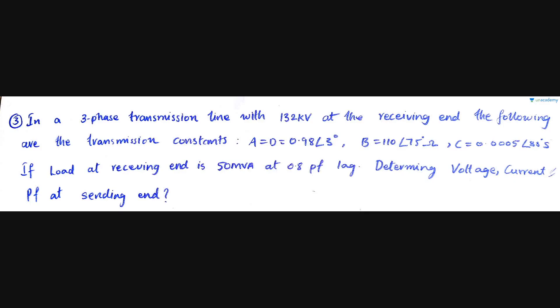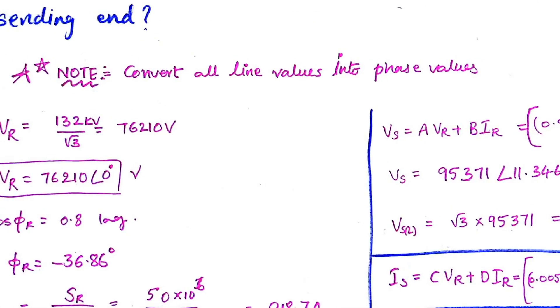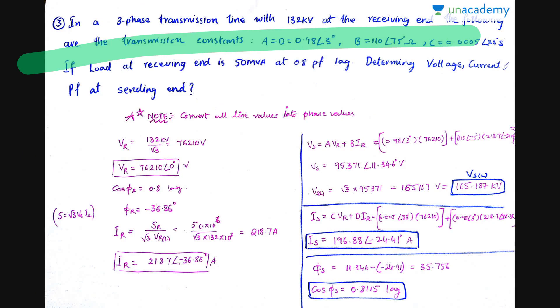Now, again, you just read the question and then pause the video and try on your own. In a three phase transmission line with 132 kV at receiving end, the following are the transmission line constants - ABCD values are given. If the load at receiving end is given as 50 MVA at 0.8 power factor lag, determine the voltage, current and power factor at the sending end.